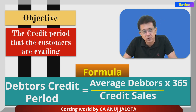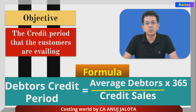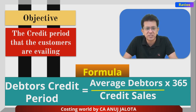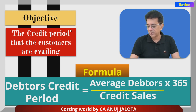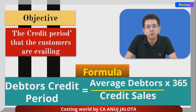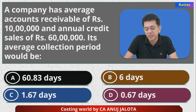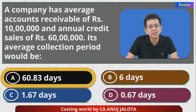Now, debtors credit period = average debtors upon credit sales into 365. Average debtors was 10 lakhs, credit sales 60 lakhs, into 365. So, 10 divided by 60 into 365 equals 60.83 days. Out of the four options, option A is the correct answer — 60.83 days. I'll see you all next time, bye.